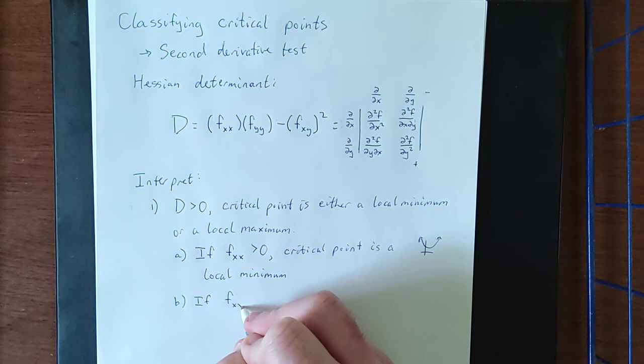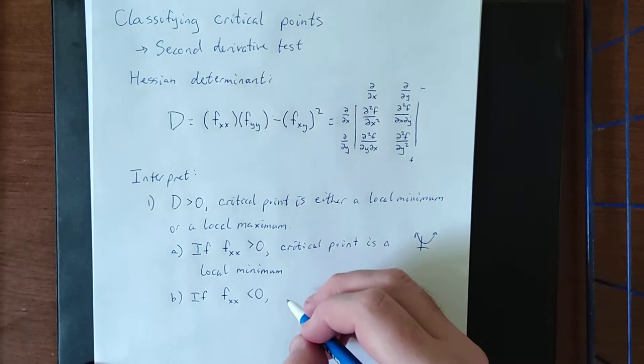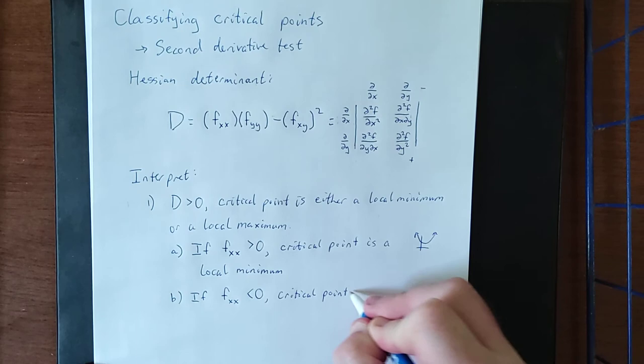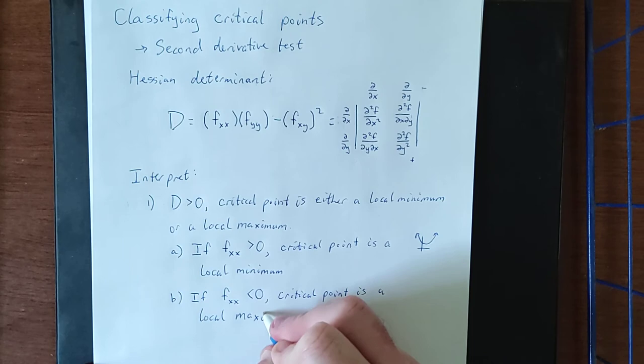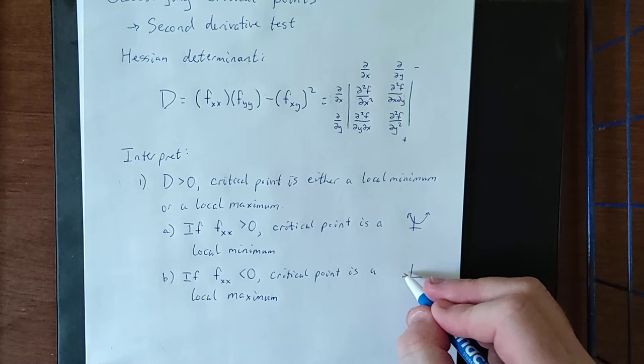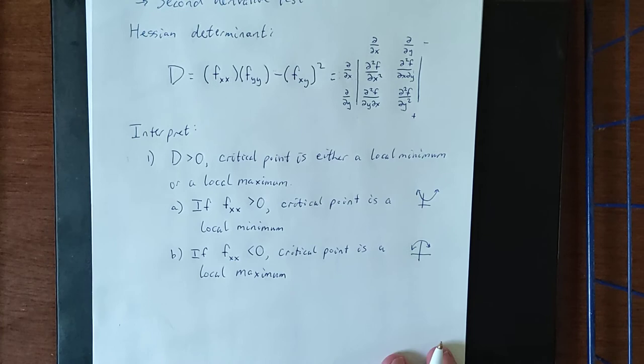If the second partial derivative of f with respect to x is less than zero, this is indicative of something that is concave down. Concave down implies a local maximum. Now for a graph in two dimensions, concave down looks like this.